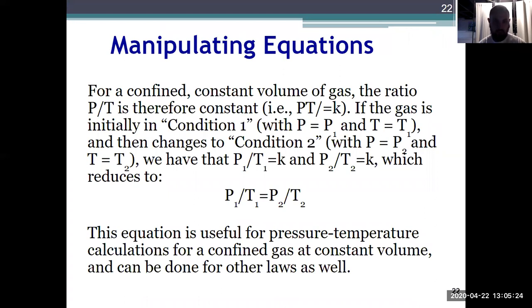We can also manipulate the equations. Starting with Amonton's law, I can relate a starting and a final state for a gas. Because the volume is constant with Amonton's law, we can relate our initial pressure and temperature to our final pressure and temperature. This modified version of Amonton's law: P1 over T1 equals P2 over T2. So if I know a starting pressure and temperature and the final temperature, I can also solve for the final pressure, or any other combination thereof. So that's the first law: Amonton's law relates pressure and temperature.